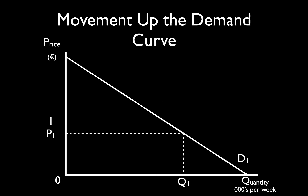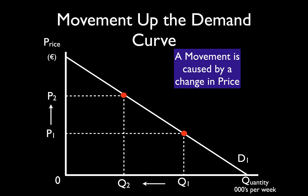A movement up the demand curve: as price rises we move up to a higher price P2, go across to the demand curve, touch it, and go down to get a lower quantity Q2 than was bought at P1. This is called a movement because the demand curve again has not changed — only the price of the good has changed. So a movement is only ever caused by a change in the selling price of the good itself; the demand curve stays in the same place and we move up the existing, constant demand curve.